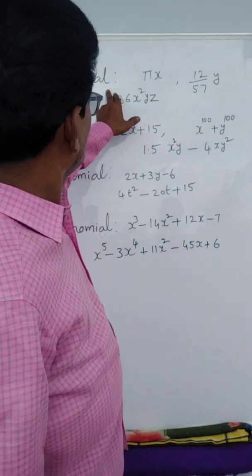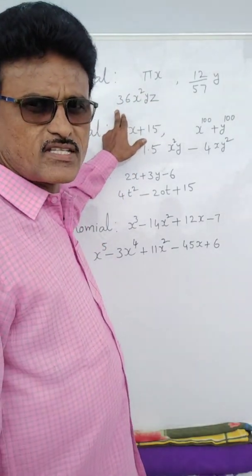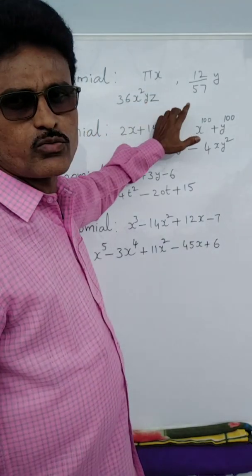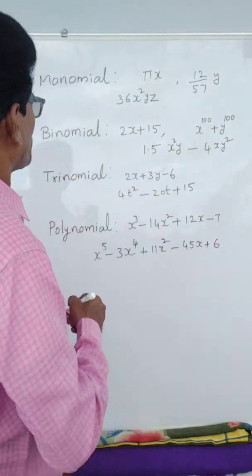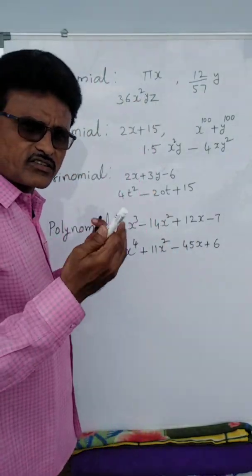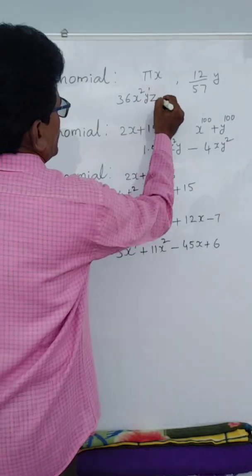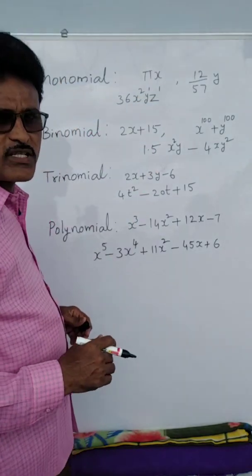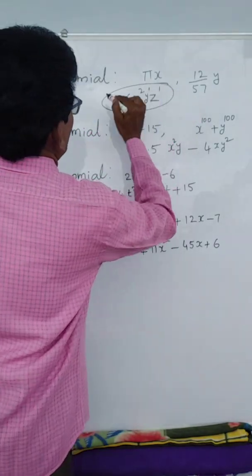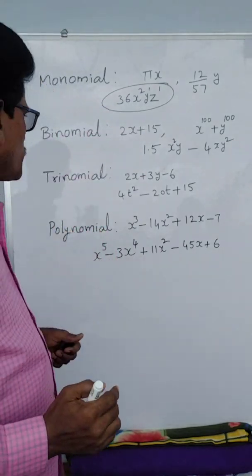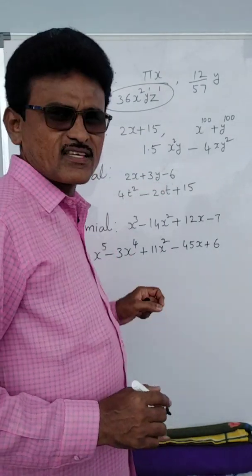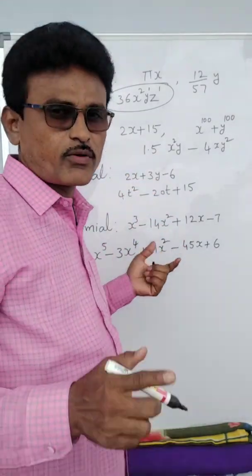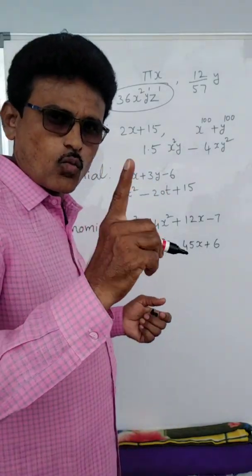Now suppose they ask: what type of polynomial is this? It is a monomial because it is a single term. What are the variables? x, y, z. What is the degree? Here x power is 2, y power is 1, z power is 1 — add all these powers: 2 plus 1 plus 1 equals 4. So the degree of this polynomial is 4. Here 2x plus 3y minus 6: x power is 1, y power is 1, highest power is 1, so degree is 1.